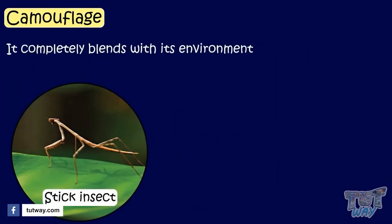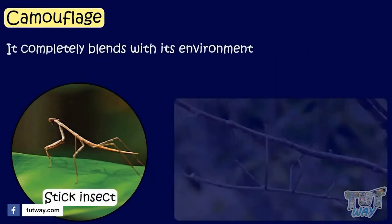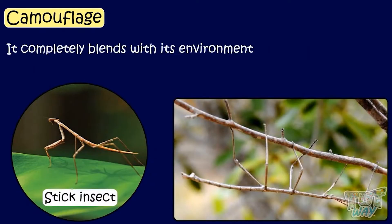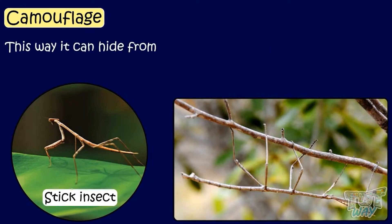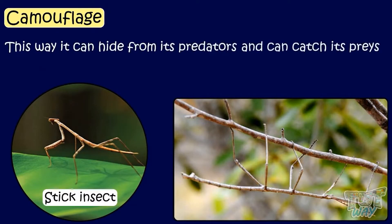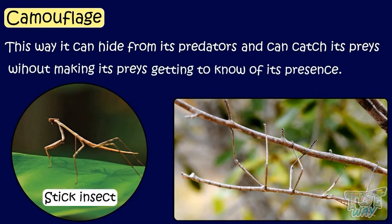This is a stick insect. It completely blends with its environment — that is, it looks like a stick itself. This way it can hide from its predators and can catch its prey without making its prey aware of its presence.